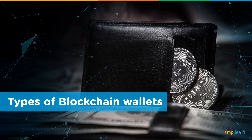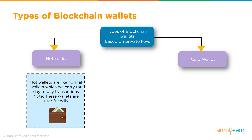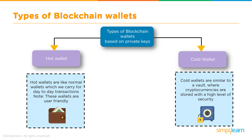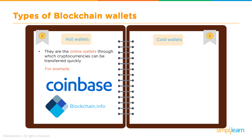There are two types of blockchain wallets based on the private keys: hot wallets and cold wallets. Hot wallets are like normal wallets we carry for day-to-day transactions and are user-friendly. Cold wallets are similar to a vault where cryptocurrencies are stored with a high level of security. Hot wallets are online wallets through which cryptocurrencies can be transferred quickly — available on the internet, for example Coinbase and Blockchain.info.